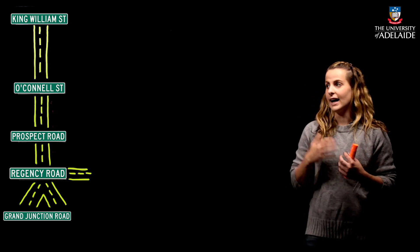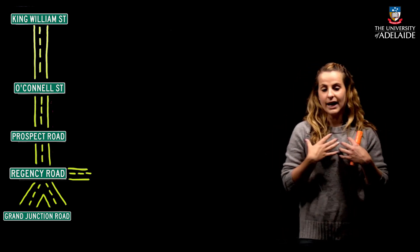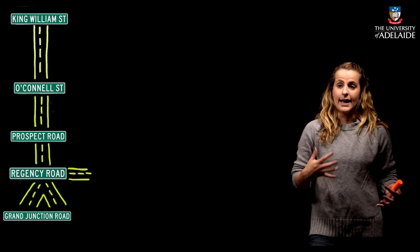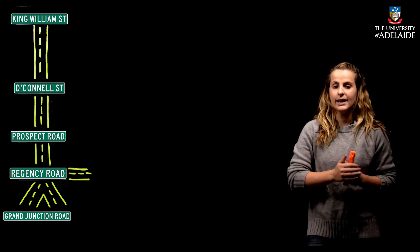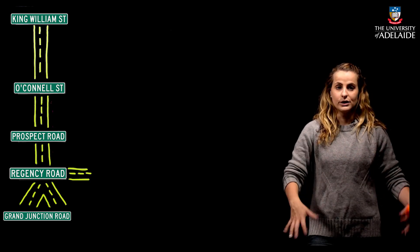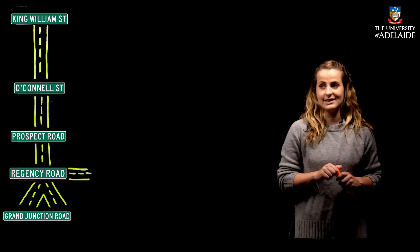Arteries are going to flow away from the heart to supply the lower and upper extremity, and veins are going to return the blood back into the circulatory system.